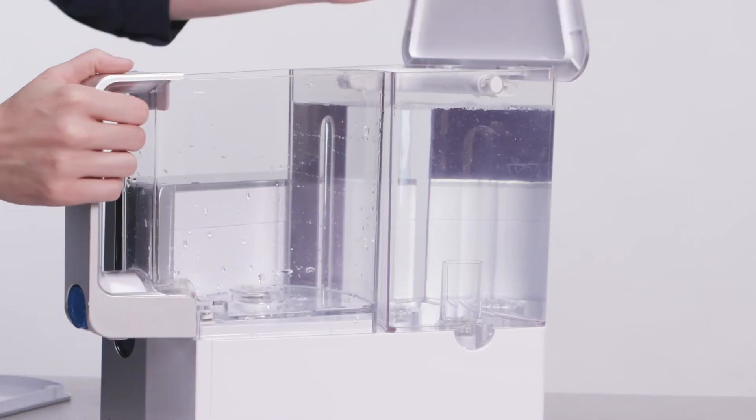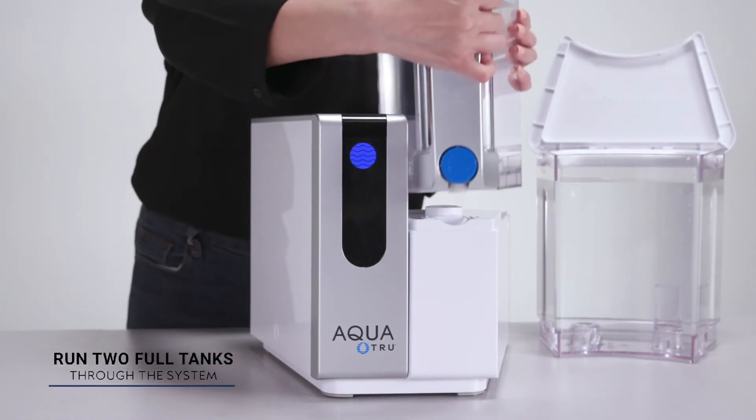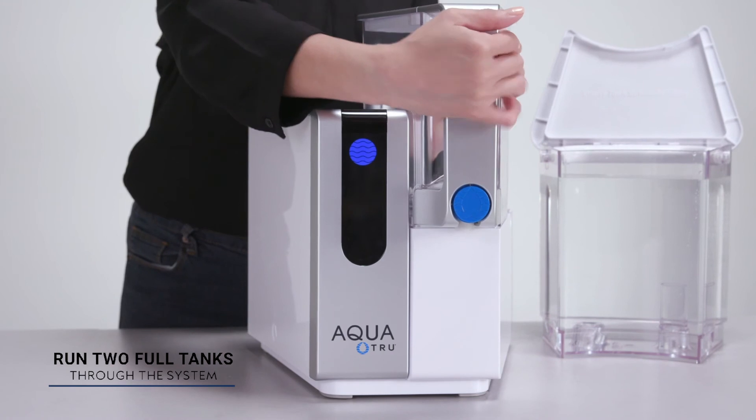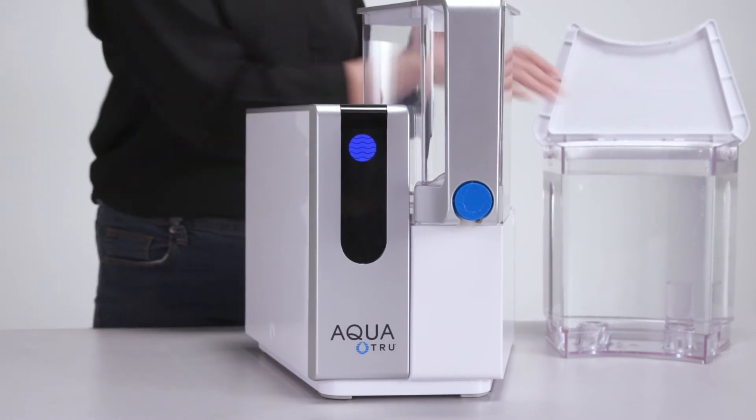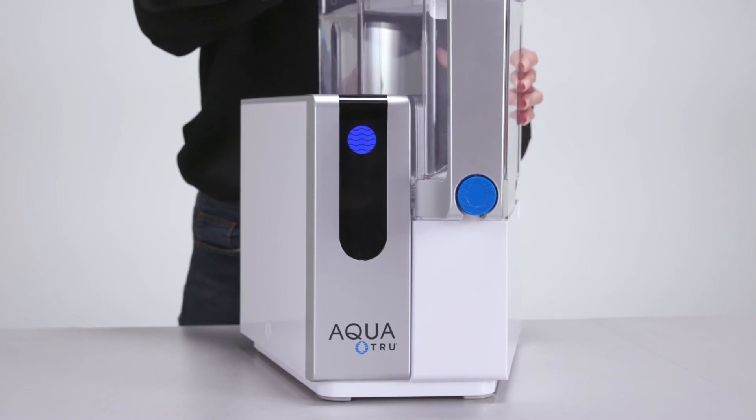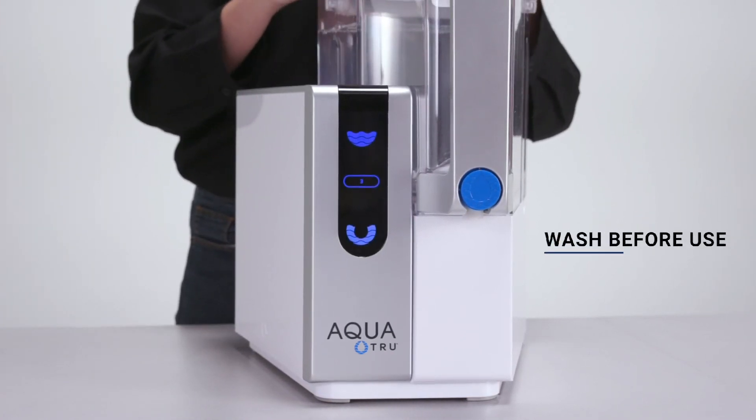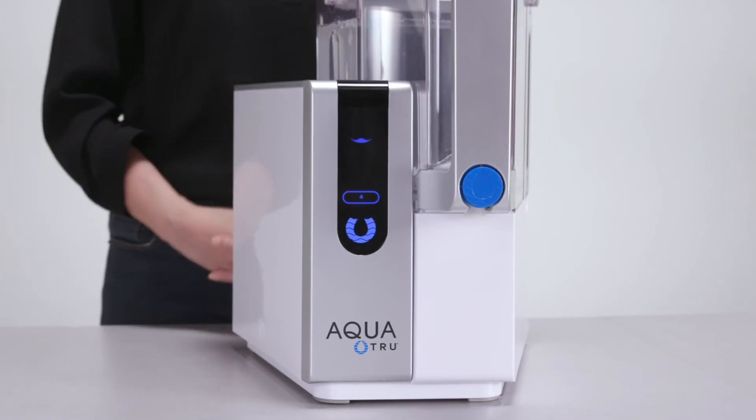Once filtering is complete, discard the water from both tanks and run two more full tanks of tap water through the system, discarding the water from both tanks after each cycle. Make sure to clean both AquaTrue tanks with soapy water before filling with tap water and setting on the base to use again.